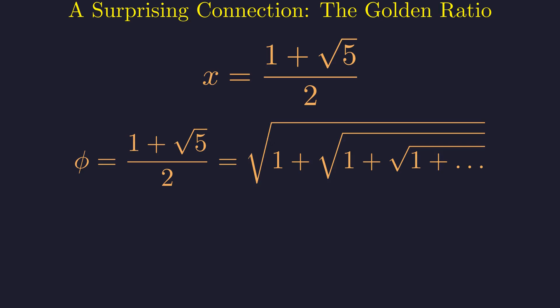Wait, that's the golden ratio! Phi, one of the most famous constants in all of mathematics. Our general pattern has the golden ratio hiding inside it as the simplest case.